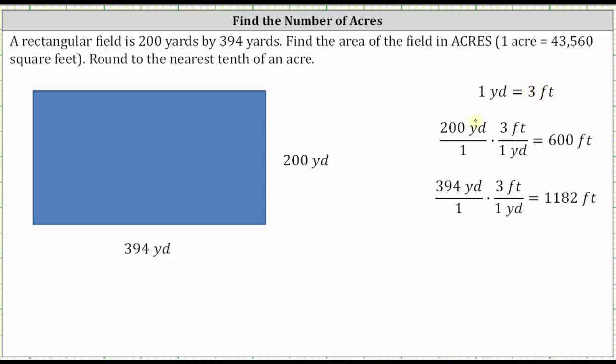Or using unit fractions, we multiply the length in yards by the unit fraction of three feet over one yard. Notice when multiplying, we have yards in the numerator and denominator, and therefore yards simplify out, leaving us with feet.